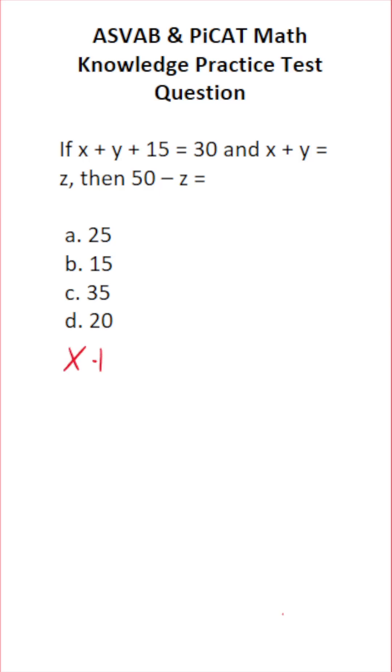We're told according to the problem that x plus y plus 15 equals 30. Likewise, we're told that x plus y equals z. And finally, we want to solve for 50 minus z.